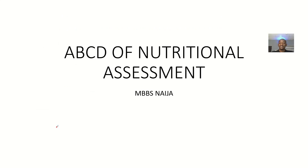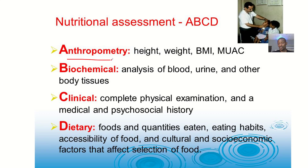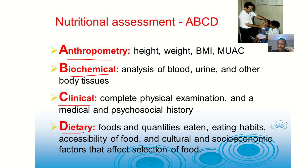Today we're talking about the ABCD of nutritional assessment. In nutritional assessment, you are trying to assess an individual and find out about their nutritional status. There's a concept known as ABCD, which is the mnemonic to remember the components of nutritional assessment. A means anthropometry, B means biochemical tests, C means clinical assessment — which includes physical examination and history taken from the patient — and D means dietary assessment.